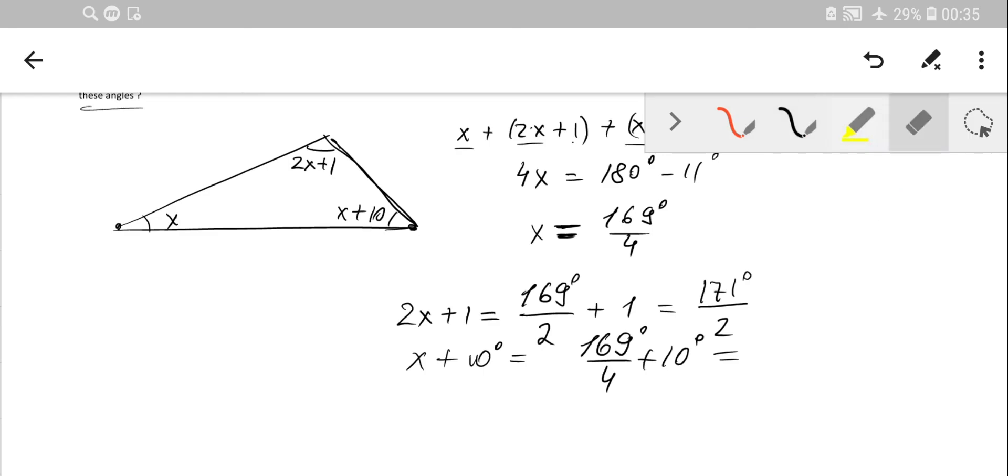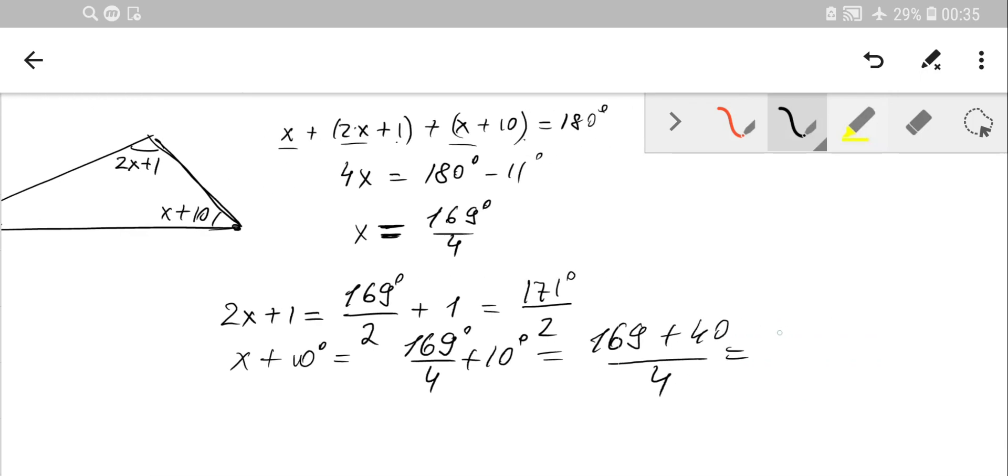And that will be equal to 209 over 4. So for those who need to calculate, just simply use a calculator and calculate, and probably round up the answer up to two decimal places.